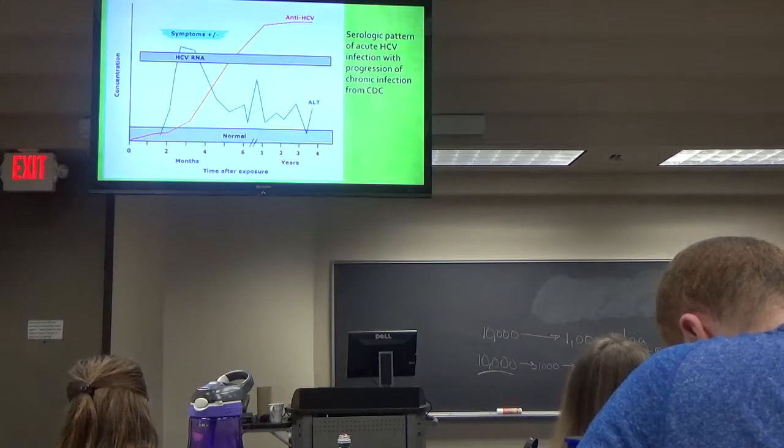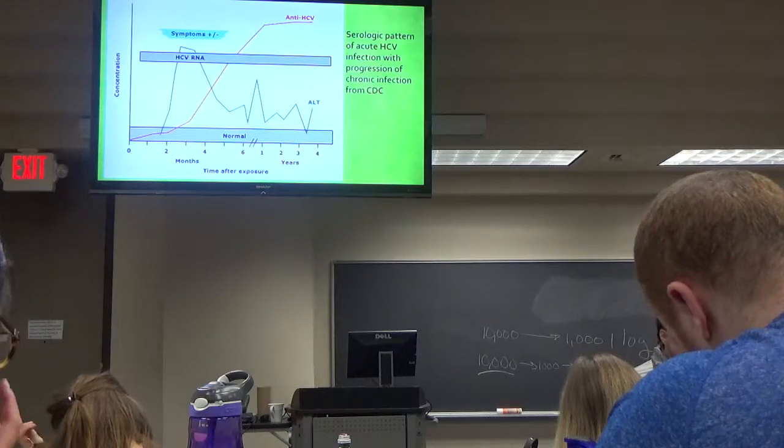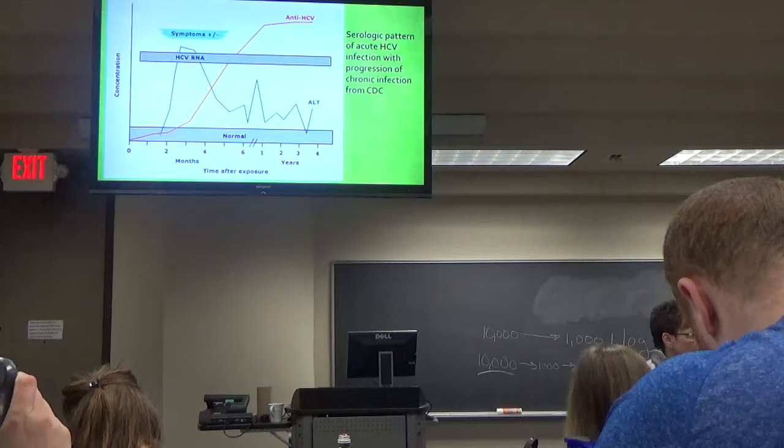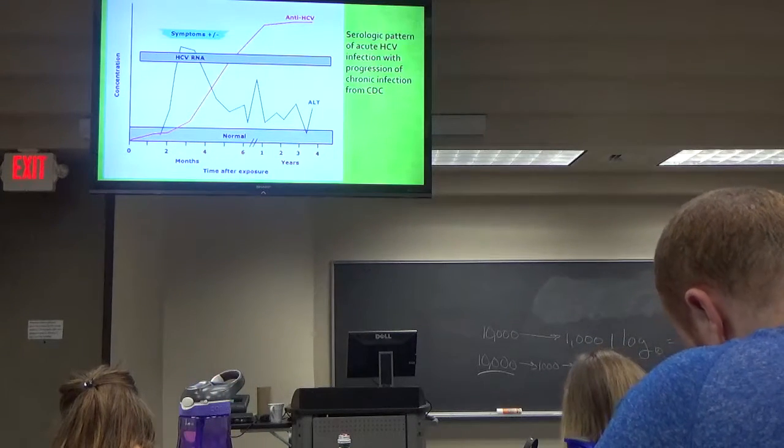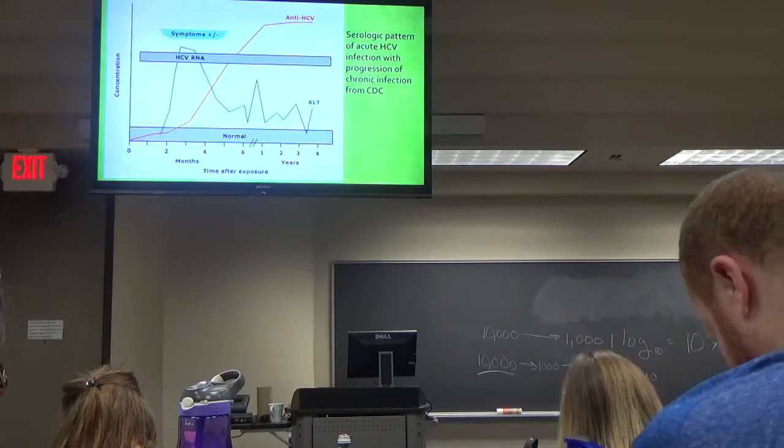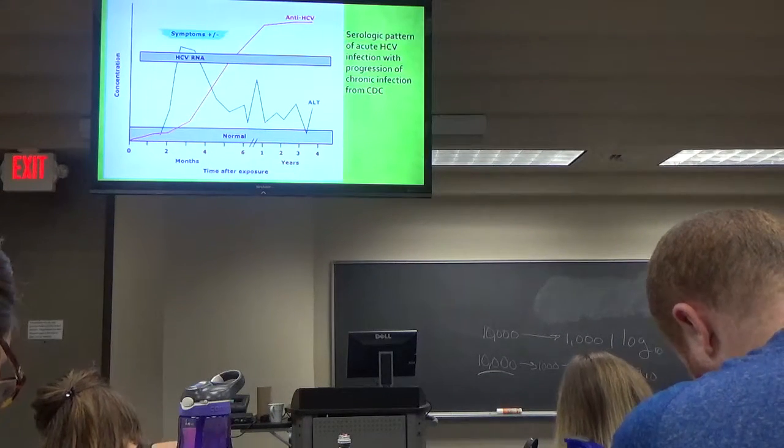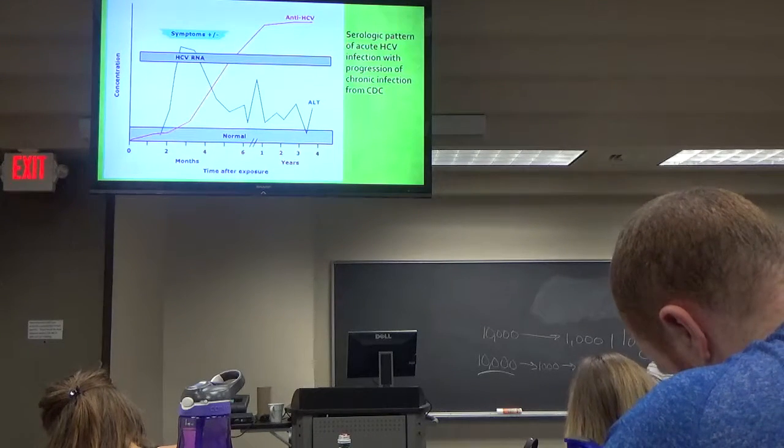People who have contraindications to all the oral agents and were left with ribavirin and interferon, those people do better treated early than late. So those would be unusual. That would be a small percentage of people that would have contraindications to all of them. And then those who desire and can commit to early treatment and can pay for it or have a way to pay for it. All right. So when to start? If possible, wait twelve weeks. See if they'll clear.